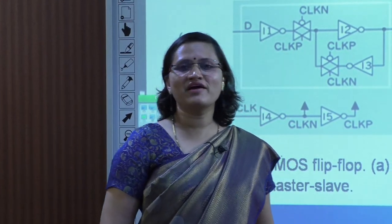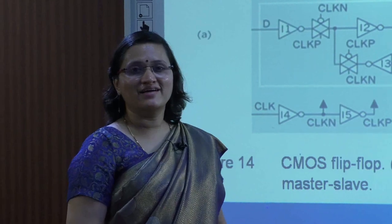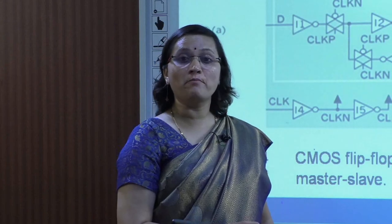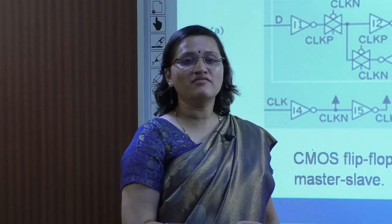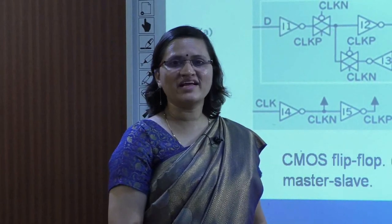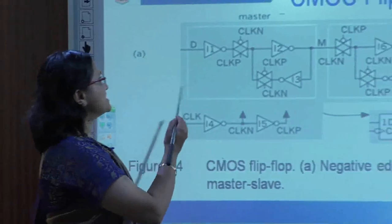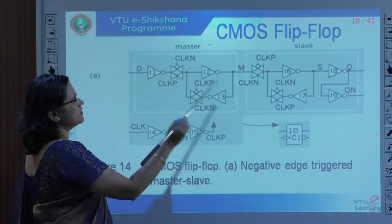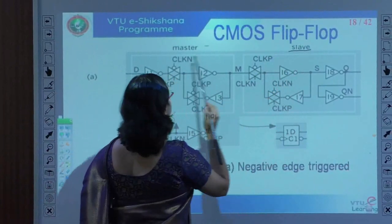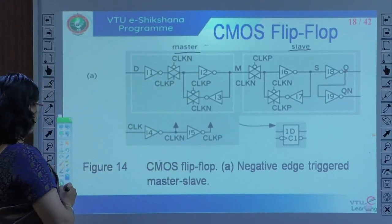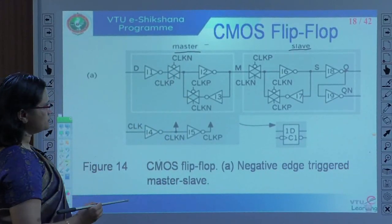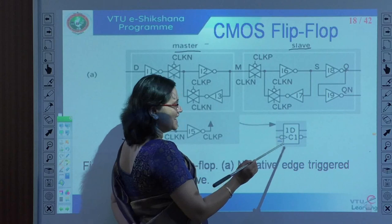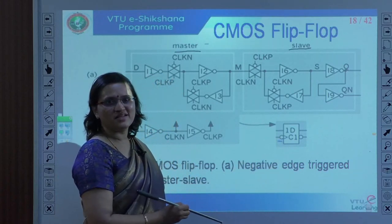Welcome back. In the last class we discussed about the D latch. In this class we are going to discuss about the negative edge triggered master-slave D flip-flop. We will see how the circuit works as master-slave. Since it is a master-slave D flip-flop, there are two stages: master and slave. Look at the logic symbol here — there is a bubble, and this bubble indicates it is a negative edge triggered master-slave flip-flop.